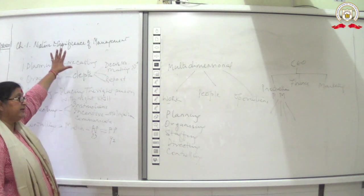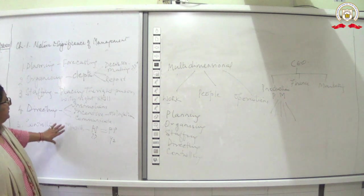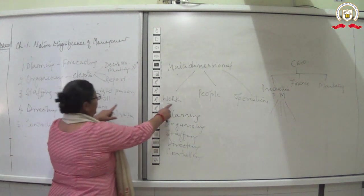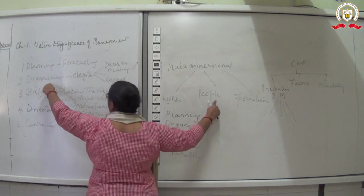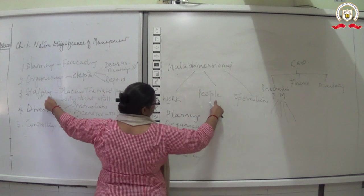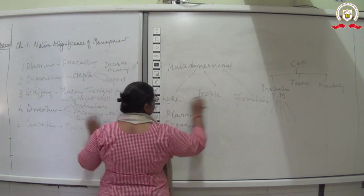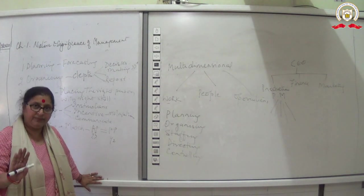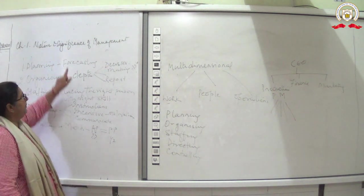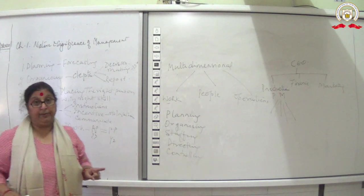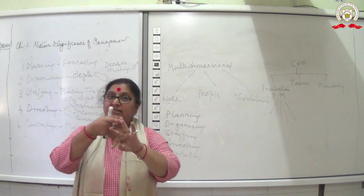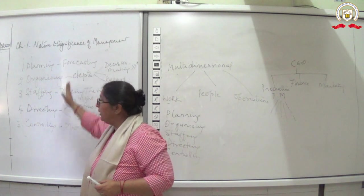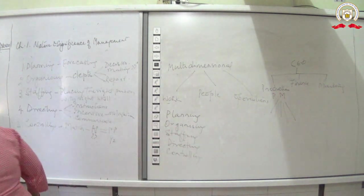These are the five functions of management. Relating back to multi-dimensional management: work is planning and organizing, people is staffing, and operations is directing and controlling. The order to remember is: Planning, Organizing, Staffing, Directing, and Controlling.